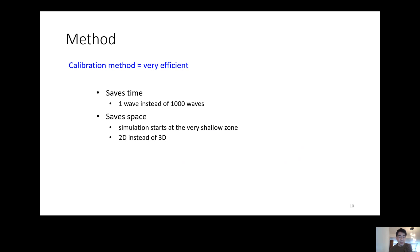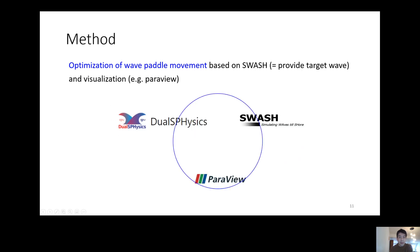Here, calibration means optimization of wave paddle movement at the shallow zone. Using this approach, wave generation can be very efficient in terms of time and space. Time is short because we can only generate the target wave. Space is also small since we start simulation close to the dike. On top, the calibration can be done in 2D instead of 3D. The calibration can be achieved together with the light wave model and visualization software.